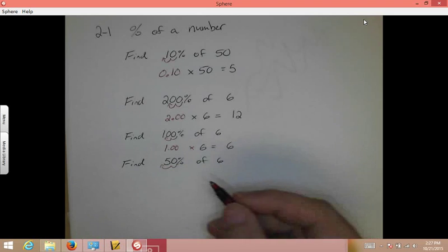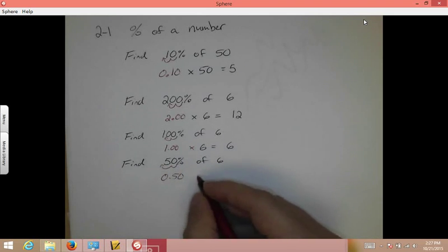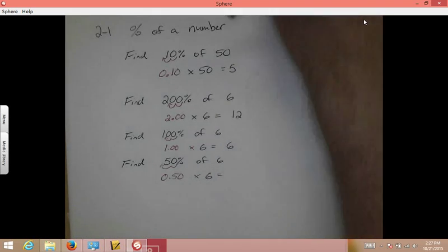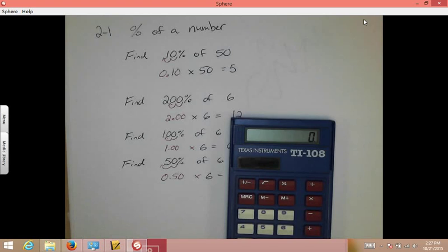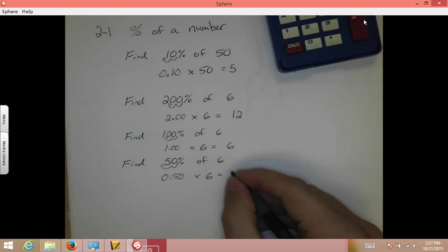To the left, to the left, we end up with 0.50 times 6, and when we do that in our calculator, 0.50 times 6, we end up with 3, which is what we assumed.